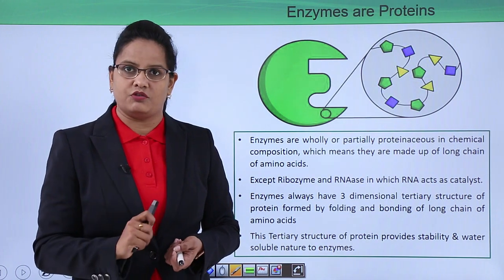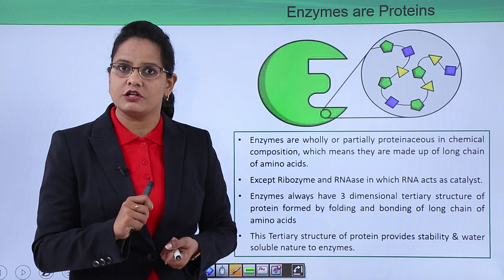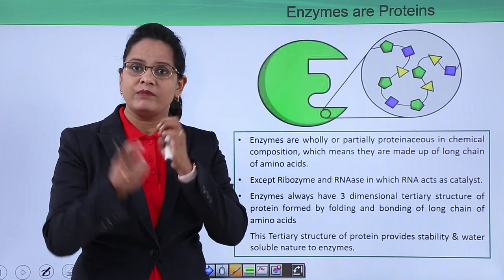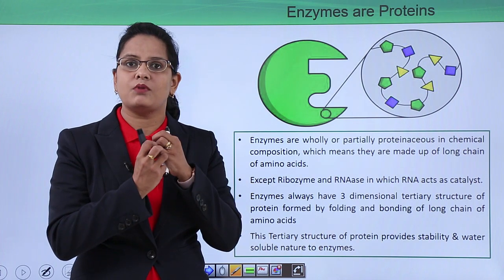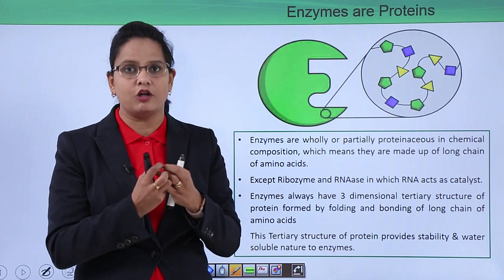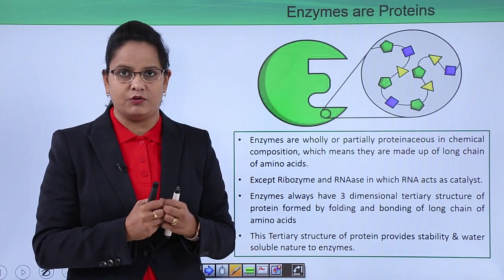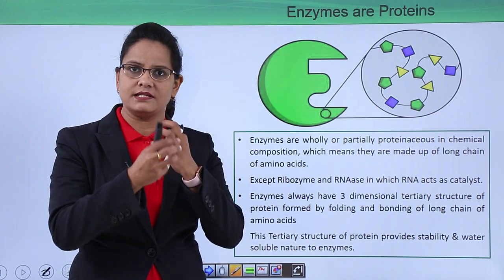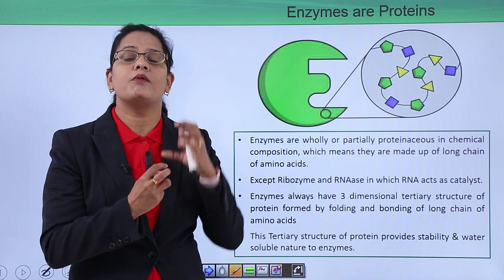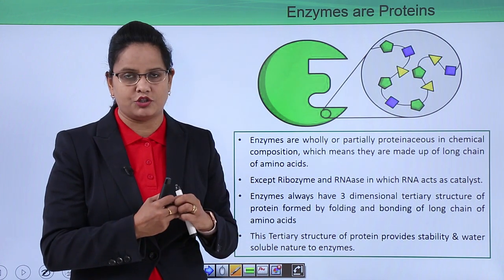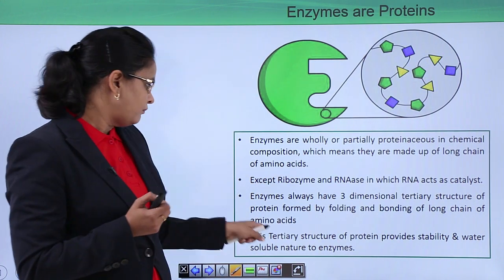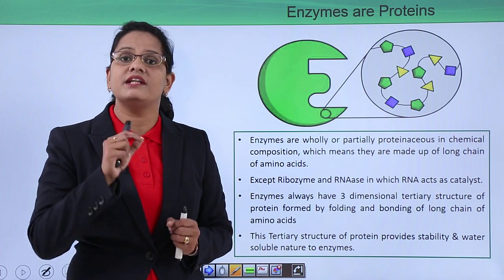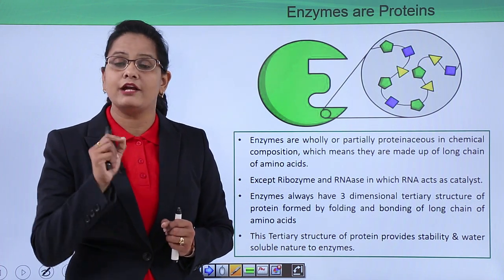Since enzymes are proteins, they have a tertiary structure. The tertiary structure is formed by coiling, hydrogen bonding, and folding of the primary structure of the protein. A long protein chain undergoes foldings and hydrogen bondings to form a three-dimensional globular structure. It is because of this tertiary structure that enzymes are stable and soluble in water.